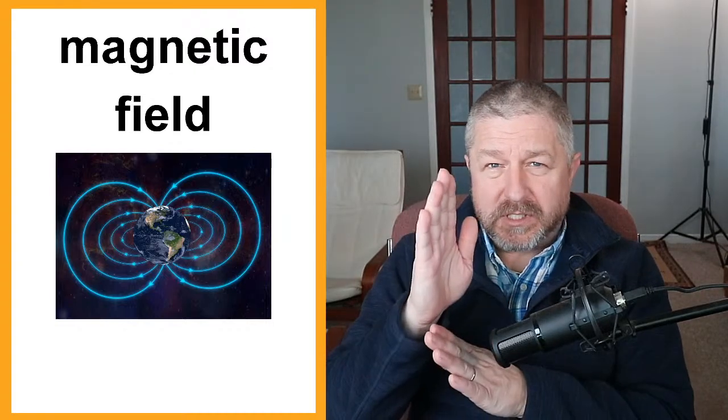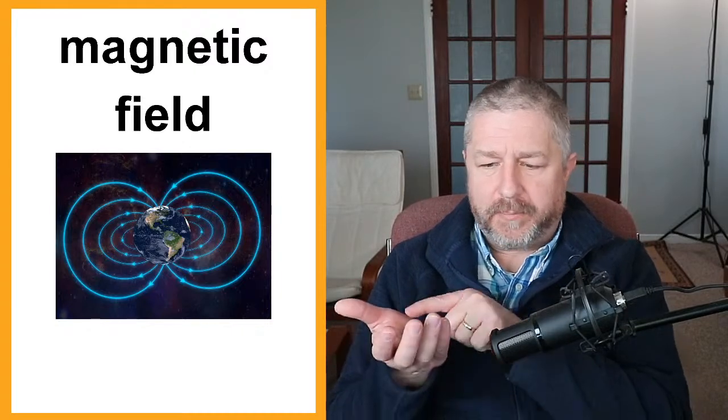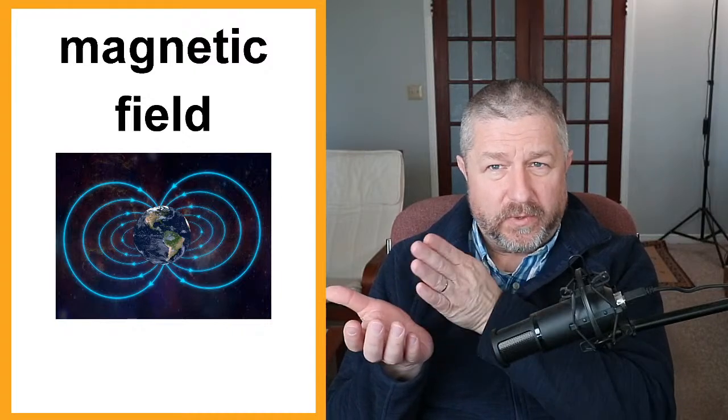We also have this curious invisible thing around the planet called the Earth's magnetic field. The Earth's magnetic field is what allows us to navigate using a compass. A compass always points to the North magnetic pole, which is slightly off from the North Pole but close enough to find North. A compass is a small round device with a magnetic needle in it. We don't fully understand the Earth's magnetic field, but it is very, very important.